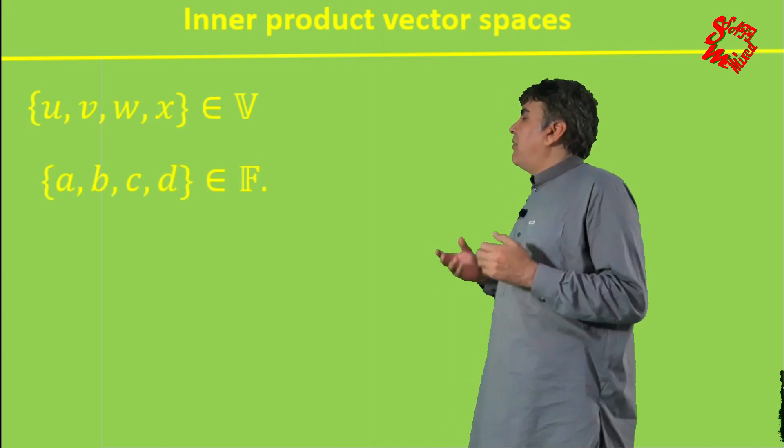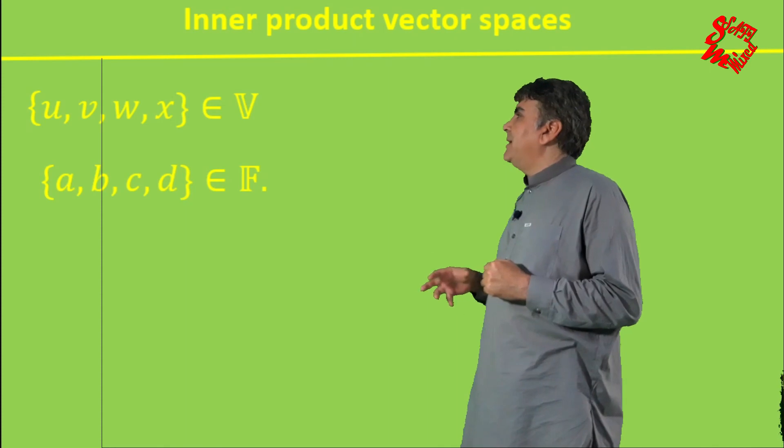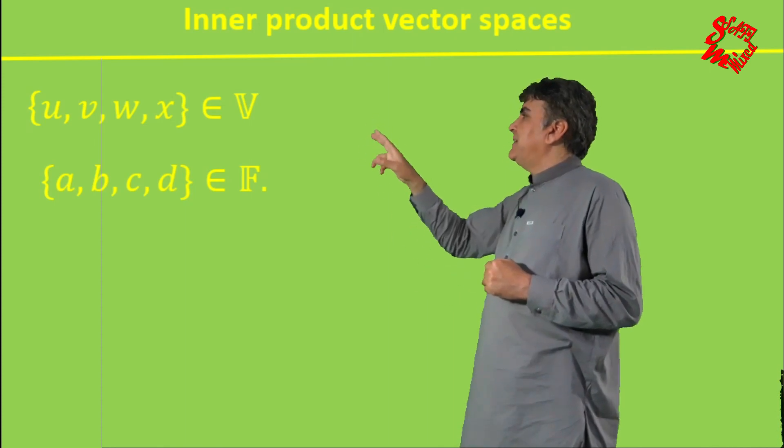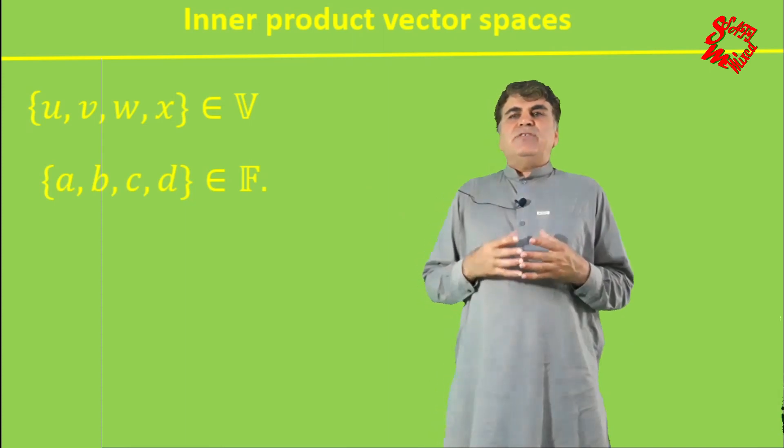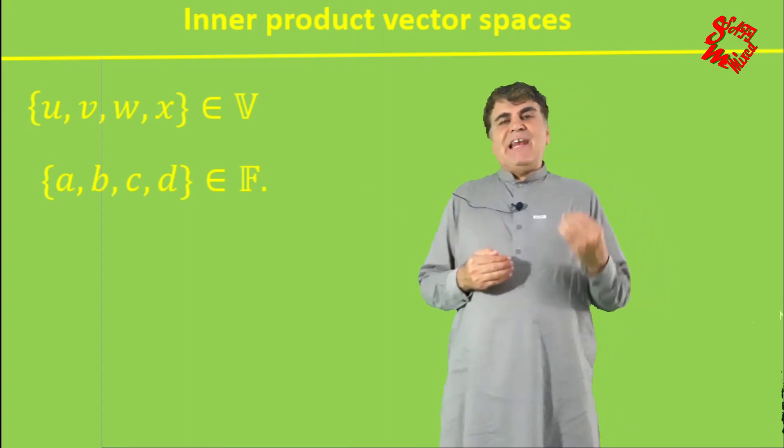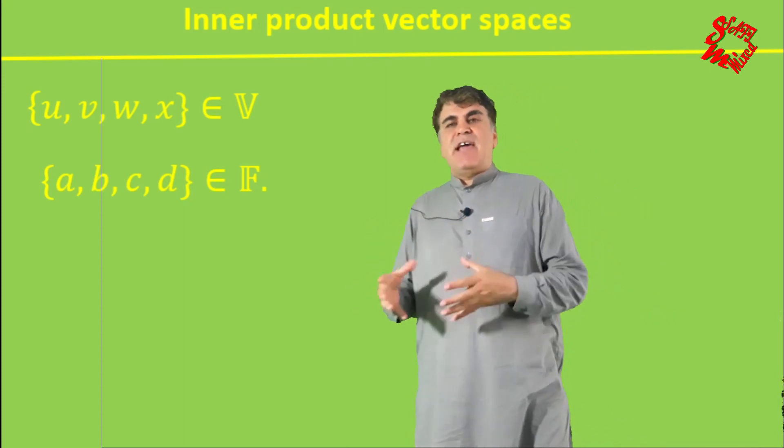Similarly, for the elements of the field F, I kept on using the initial alphabet such as a, b, c, d belongs to the field F. This is the way usually mathematicians follow for differentiating between the elements of vector space and the elements of field F.